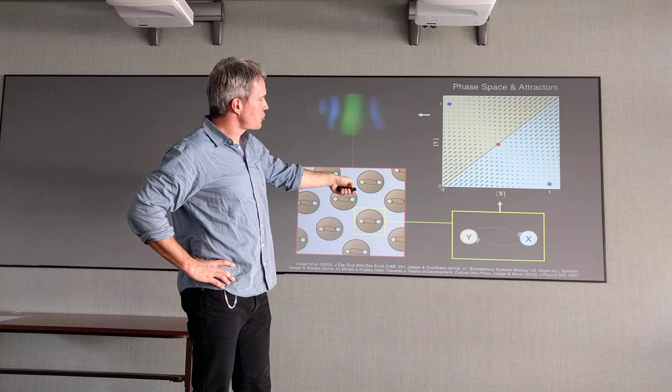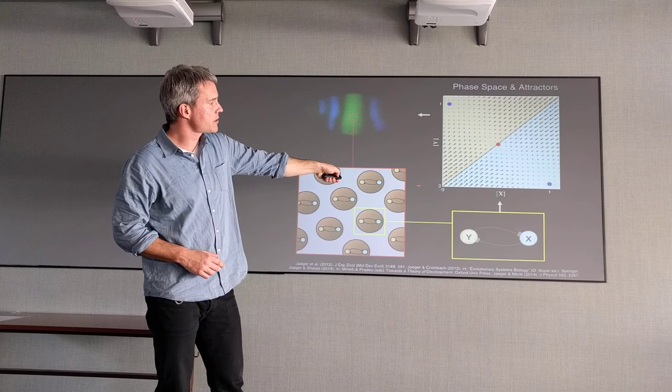The first abstraction that you need - bear with me, it will become clearer why that is - is the idea of a phase space. What you draw is you have two factors in the system, the y and the x, and they have different concentrations. You just draw two axes that have the concentration of the two different factors.